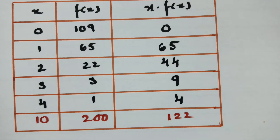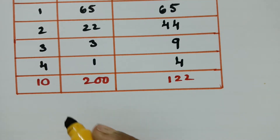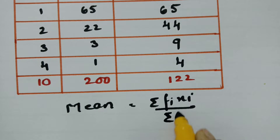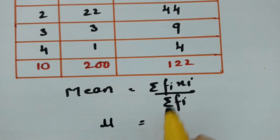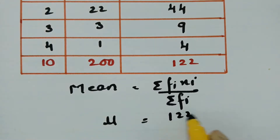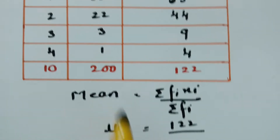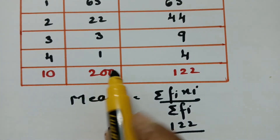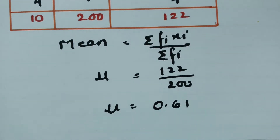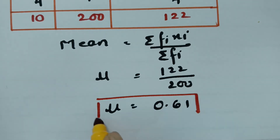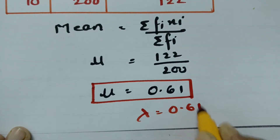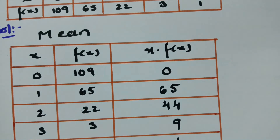To find the mean, we use the formula: mean μ = Σ(fᵢ · xᵢ) / Σfᵢ. The numerator is 122 and the denominator is 200, so the mean is 122/200 = 0.61. Therefore lambda λ = 0.61.